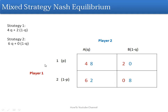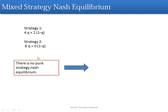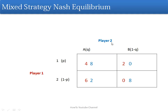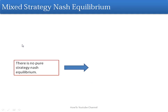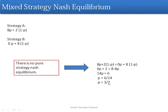Let's say we have this payoff matrix for Player 1 and Player 2. The first number is the payoff for Player 1 and the second number is the payoff for Player 2, and there is no pure strategy Nash equilibrium. We will assume that Player 2 is going to play strategy A with probability Q and strategy B with probability 1 minus Q. For Player 1, strategy 1 will be played with probability P and strategy 2 with probability 1 minus P.